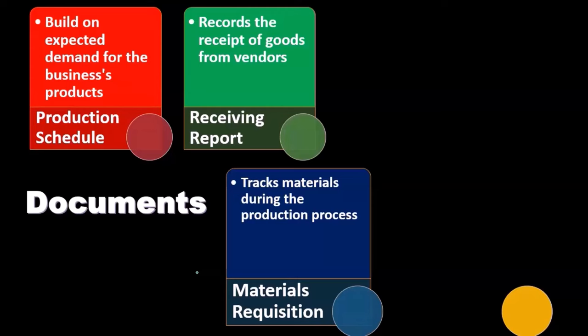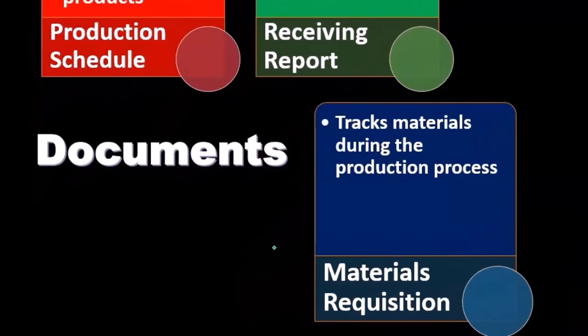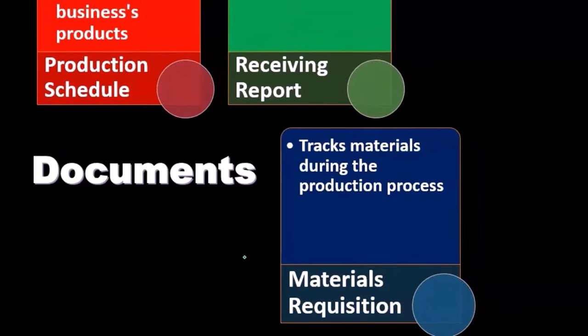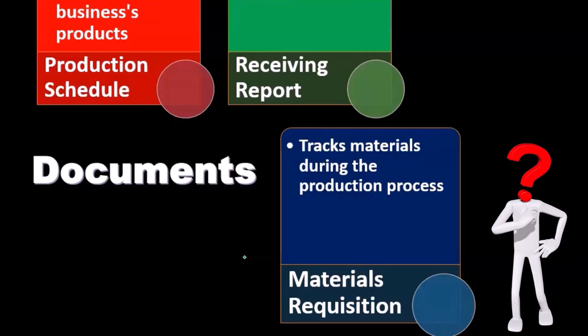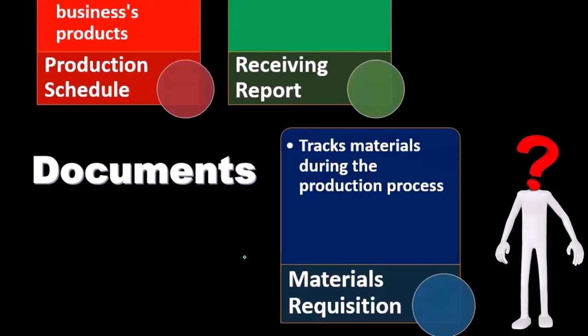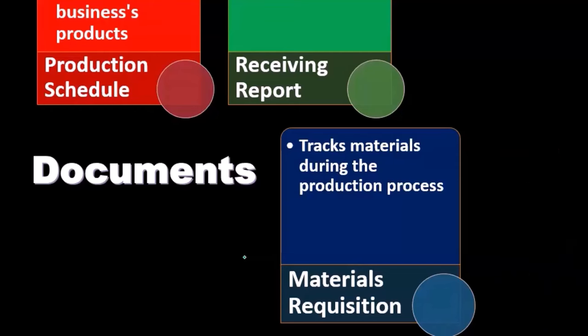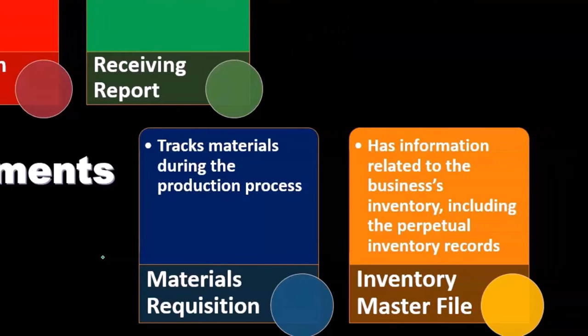The materials requisition tracks materials during the production process. It is an internal form within the organization. In a job cost system where we're making inventory, the materials requisition form is used to move materials — for example, when making guitars, moving the wood from raw goods inventory to work in process. This is internal documentation transferring from one inventory account to another, such as raw materials to work in process.